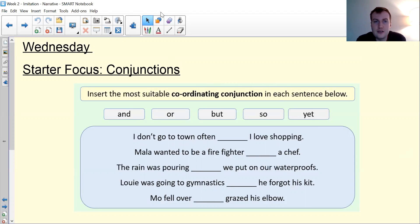Okay, let's see how you did. For the first one, I don't go to town often. It's an opposite, but I love shopping. So hopefully you put but. Marlowe wanted to be a firefighter, it's an option, or a chef. So hopefully you put or.